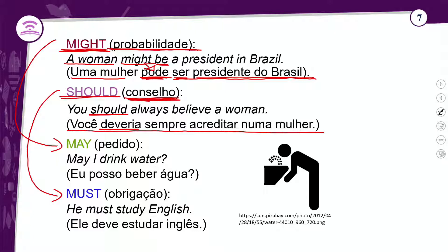O verbo 'may' expressa pedido e também possibilidade de algo ser realizado, igual ao 'might', só que com probabilidade maior. Na nossa aula, trouxemos o 'may' com a ideia de fazer um pedido muito educado. Exemplo: 'May I drink water?' — eu posso beber água? O 'can' também serve para pedido, mas de forma mais informal: 'Can I drink water?'